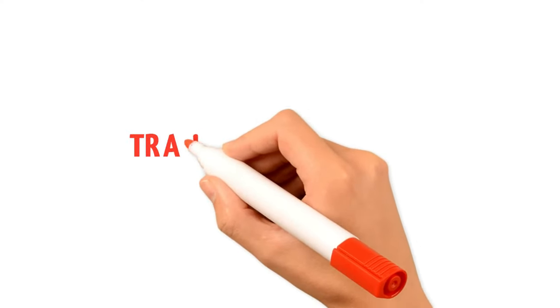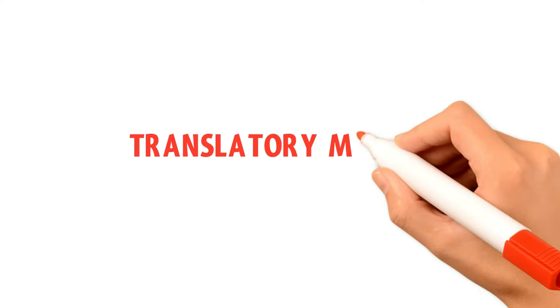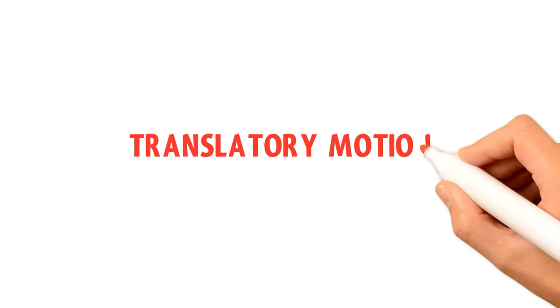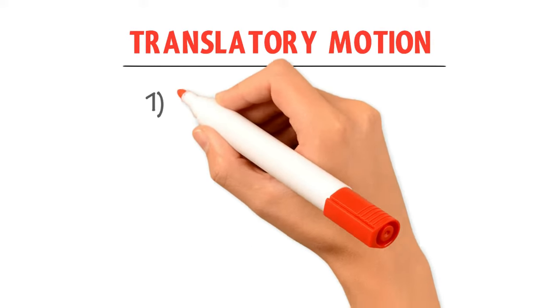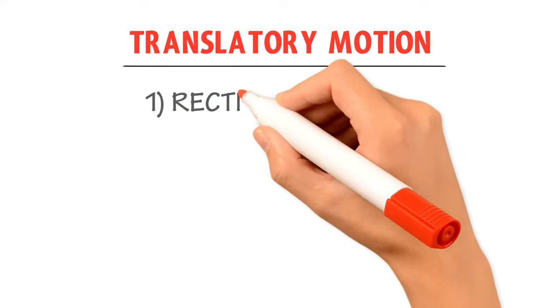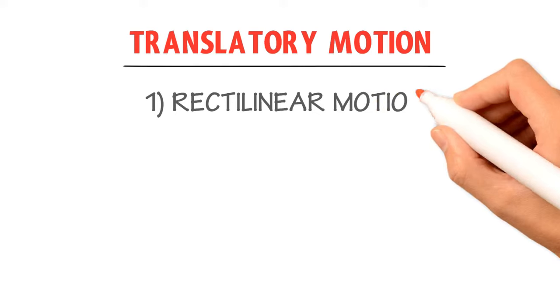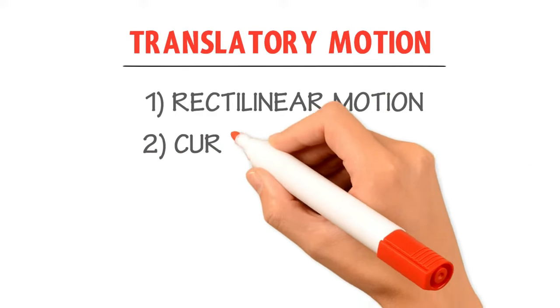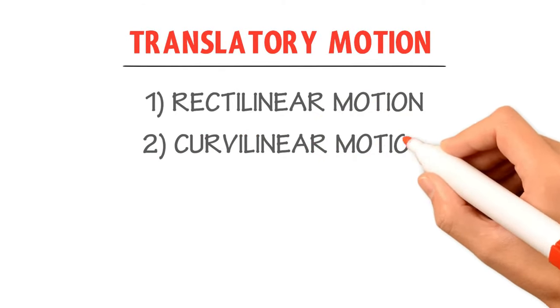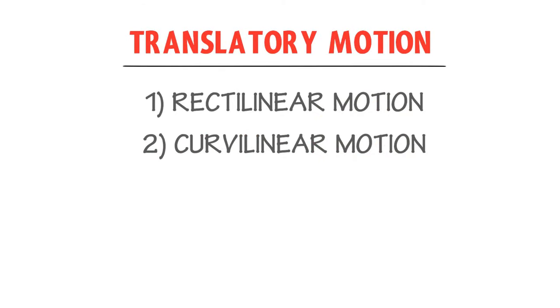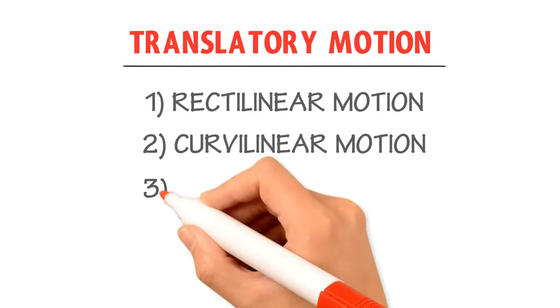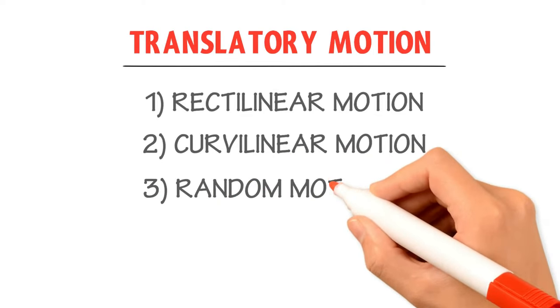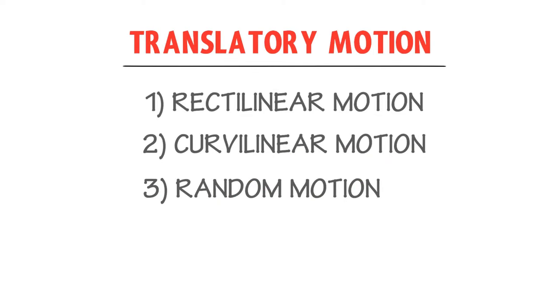Translatory motion is further divided into three types. The first type is rectilinear motion, the second type is curvilinear motion, and the third type is random motion.